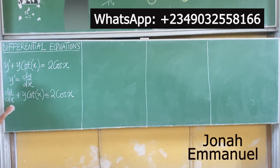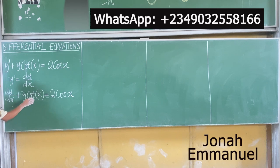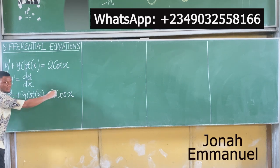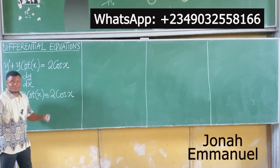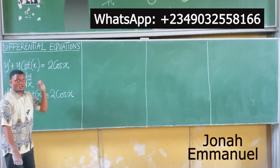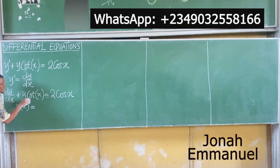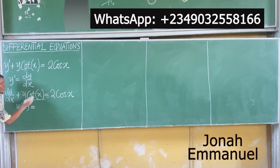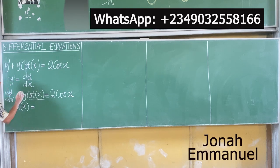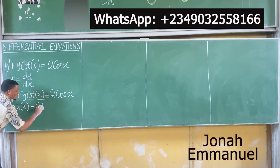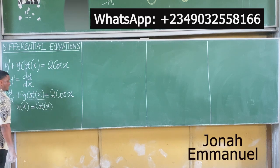Now if you look at this, it follows the form dy/dx plus u(x)·y is equal to v(x). This is u(x), that is v(x). So it becomes the integrating factor concept. From here, u(x) is simply whatever is attached to y — it could come before y or after y. So u(x) is equal to cos(x).